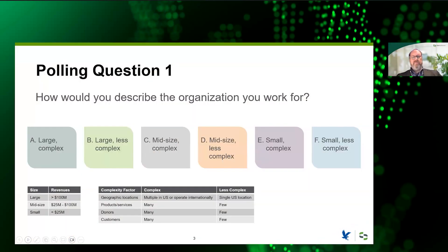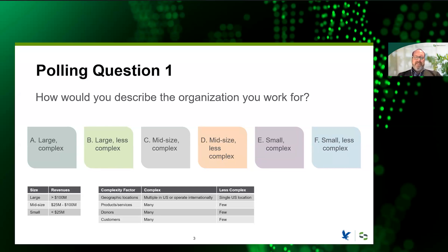First polling question of the day. Please make sure that you answer these to get CPE credits. How would you describe the organization you work for? Is it large and complex, large and slightly less complex, mid-size complex, less complex, small complex, less complex? We're seeing a fair distribution here — about 25% large and complex, 23% mid-size complex, and then roughly equal weights between mid-size less complex, small complex, and less complex. So there's not a lot of large less complex, which makes sense — the moment you get large, you start to get complex.